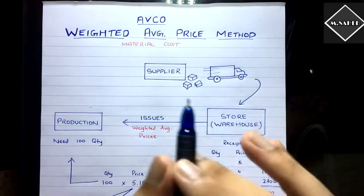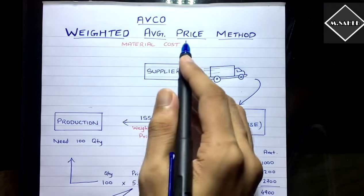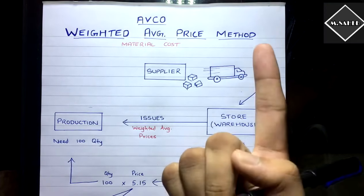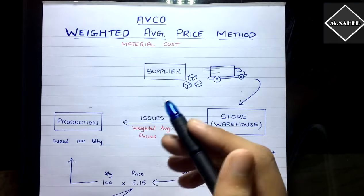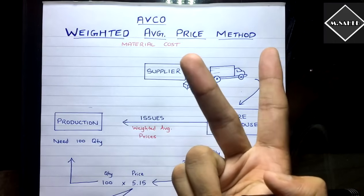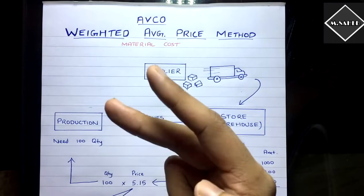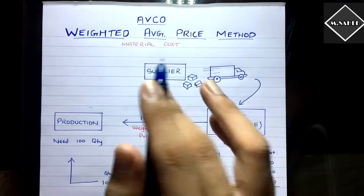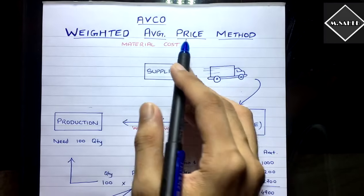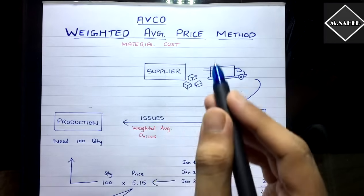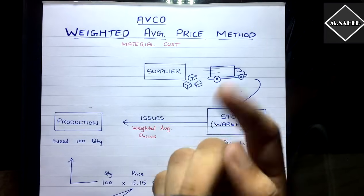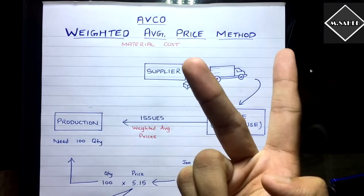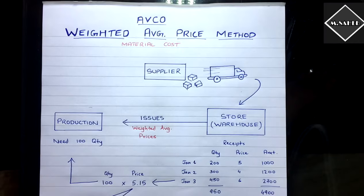In the Weighted Average Price method, we take both price and quantity into consideration while calculating the average. In the Simple Average Price method, only price was considered. Here, both quantity and price are taken into account.